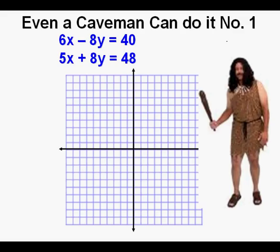Let's have Og do another one and check him again. The second system is: 6x minus 8y equals 40 and 5x plus 8y equals 48.